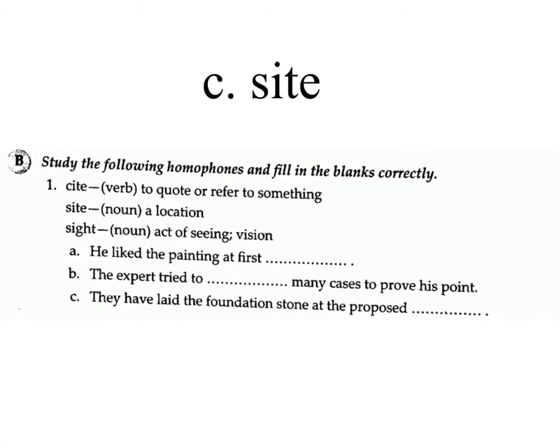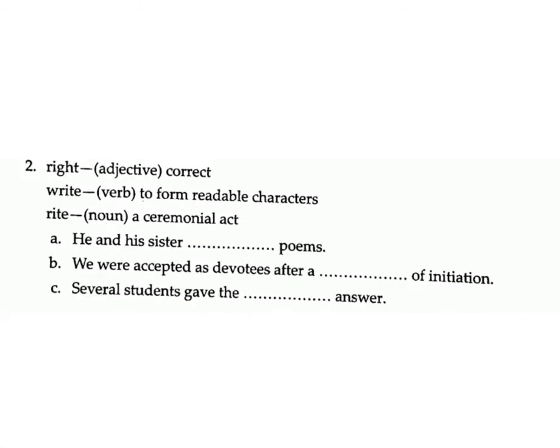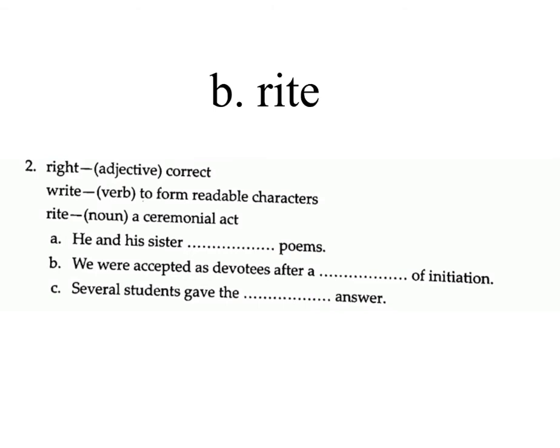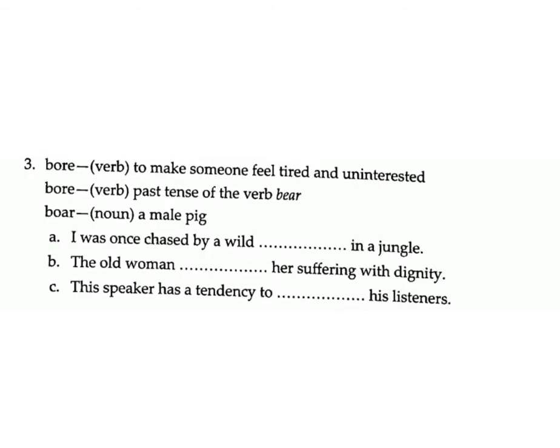(c) They have laid the foundation stone at the proposed — answer: site. 2. Right (adjective) = correct; write (verb) = to form readable characters; rite (noun) = a ceremonial act. (a) He and his sister — poems — answer: write. (b) We were accepted as devotees after a — of initiation — answer: rite.